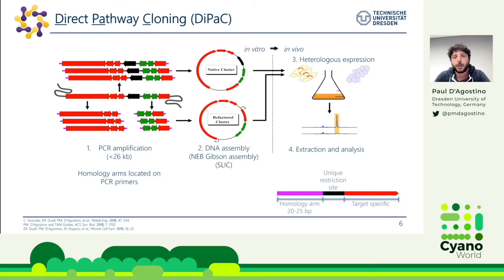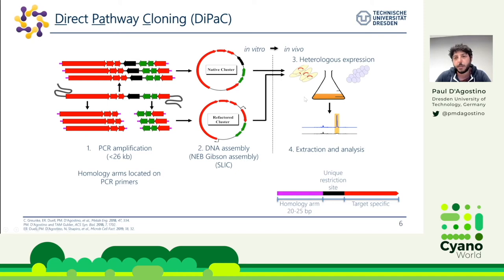You then transform this into a heterologous host — most commonly E. coli — express the pathway, and if you're lucky, you then have a new peak, which is the new compound.